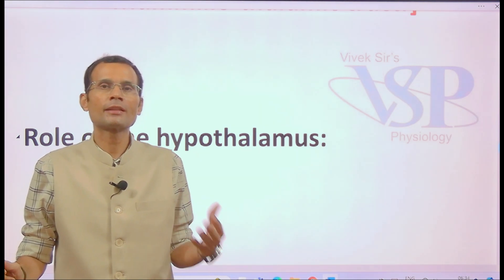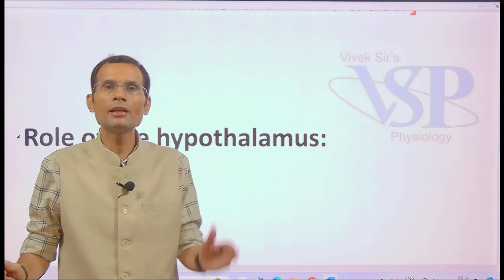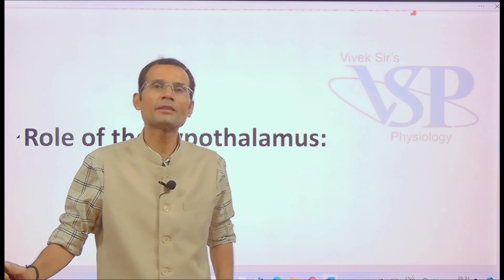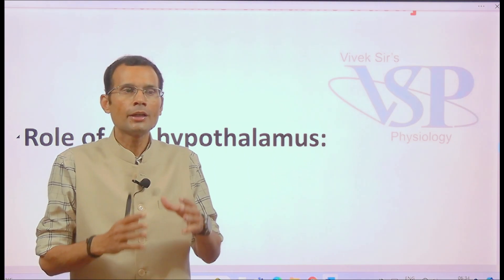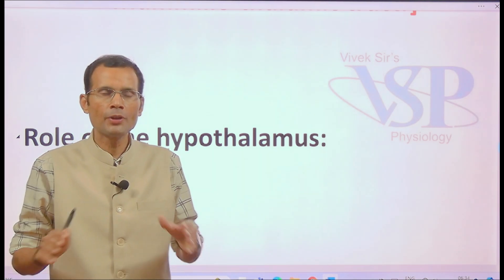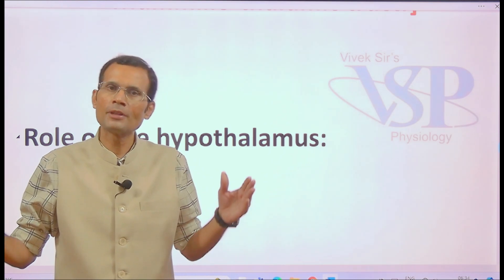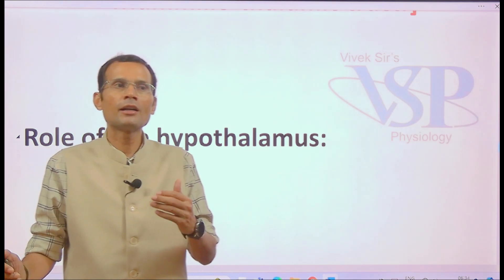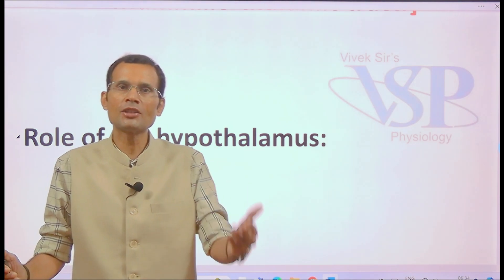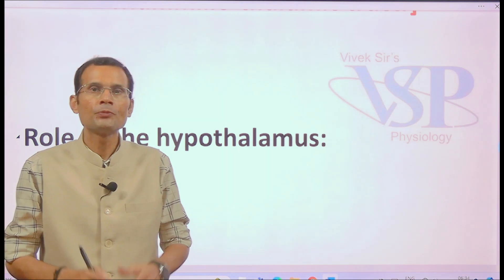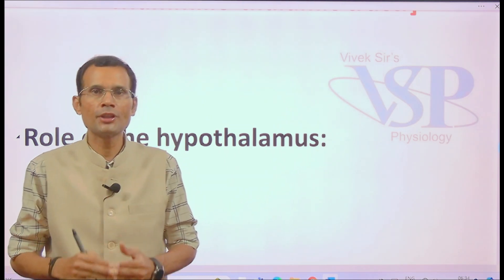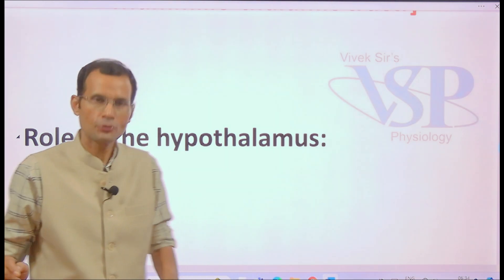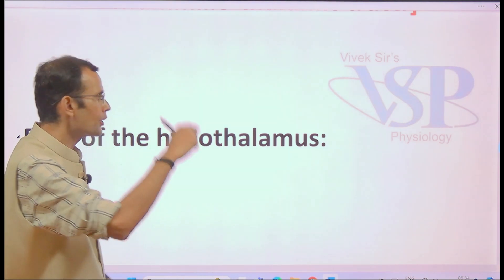Nucleus accumbens is a part of the limbic system with very densely populated dopaminergic neurons. Dopamine is the neurotransmitter associated with reward and pleasure. Therefore, nucleus accumbens is associated with reward, pleasure, and addictive behavior in humans — add this function to your short note.